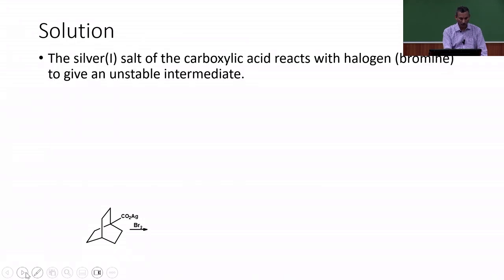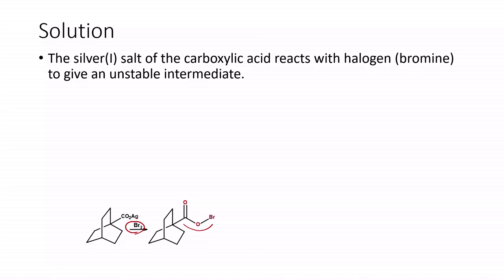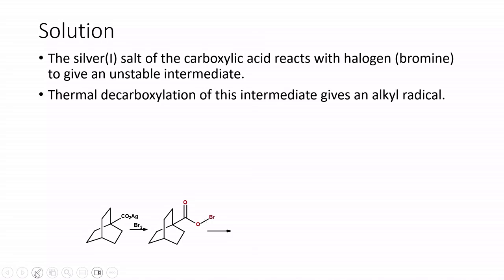Here, this is the silver salt of the carboxylic acid, and this reacts with the bromine molecule to give an unstable intermediate. The silver is replaced by one of the bromine atoms and we end up with silver bromide as a precipitate. That is the driving force for the formation of this unstable intermediate. Once the intermediate is formed, it undergoes thermal decarboxylation.